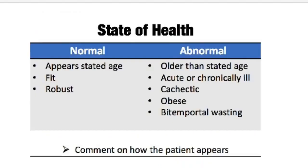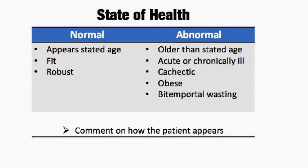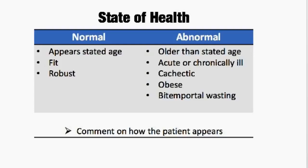When we talk about state of health, we're talking about the normal things you're going to say: the patient appears the stated age, they're fit, they're robust. Abnormal findings might be that they appear older than stated age, acutely or chronically ill appearing — not that they are acutely ill but that they appear that way. They might appear cachectic, which is that kind of wasting, really frail and wasted away. They might be obese, which is the opposite of cachectic. You could notice temporal wasting, where the temples have atrophied and you can see that bone above and lateral to the eyes.